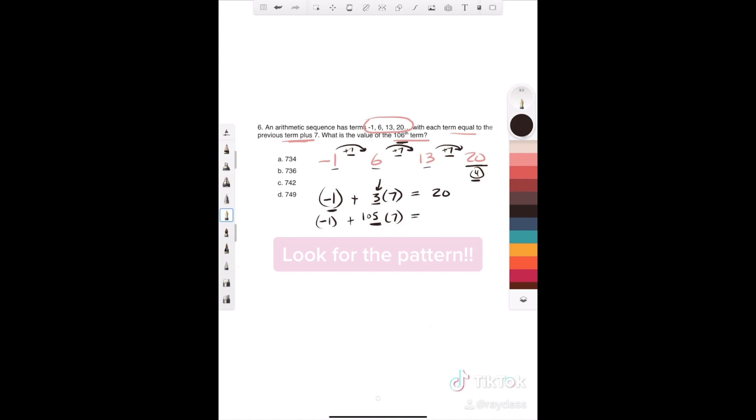105 sevens, so that'd be negative 1 plus 735, which is 734.